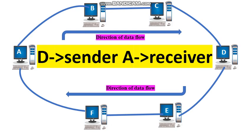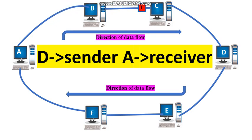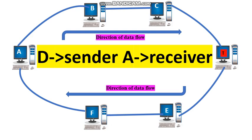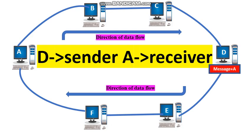In the token passing access method, if a station wants to transmit data, it should hold the token which is traveling along the ring. It should check whether the token is empty or not. If the token is empty, then it can hold the token. Here, station D wants to send data, so it should hold the token.